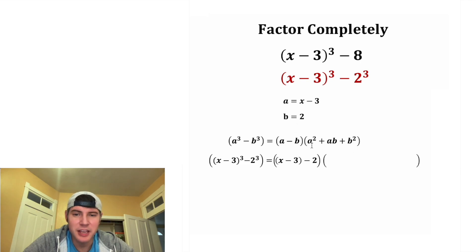And then for the second parentheses, a squared would be x minus 3 squared plus, and then for the middle term, a times b would be 2 times x minus 3. And then for the third term, b squared would be 2 squared.